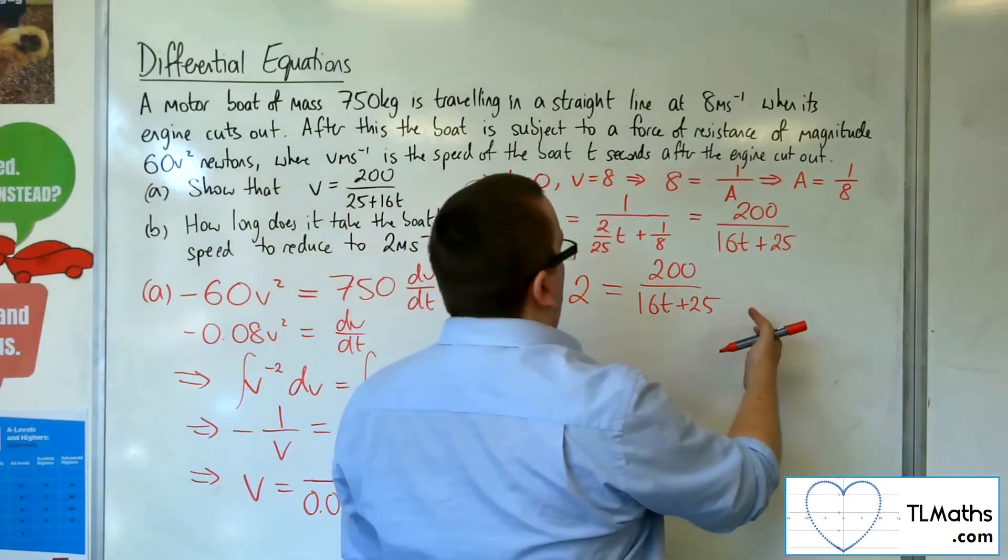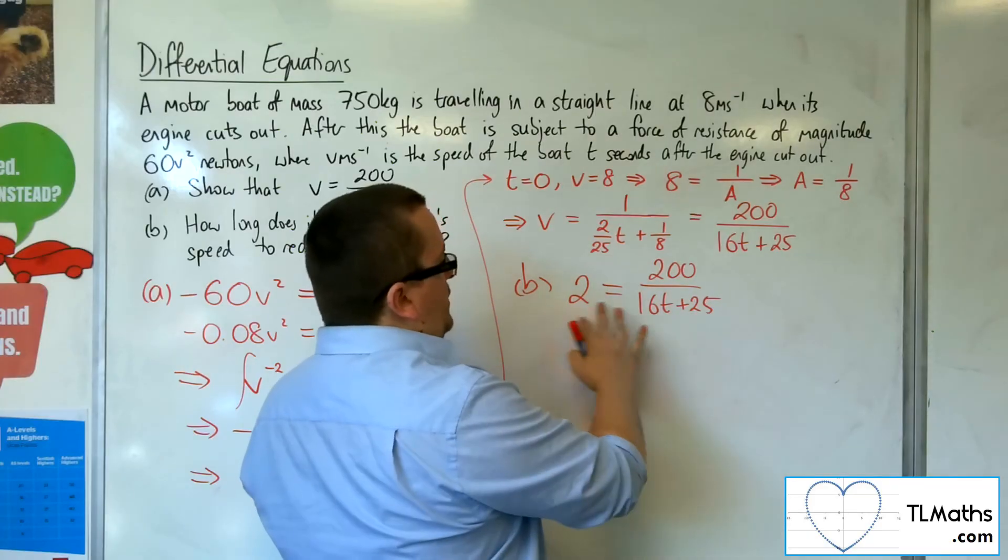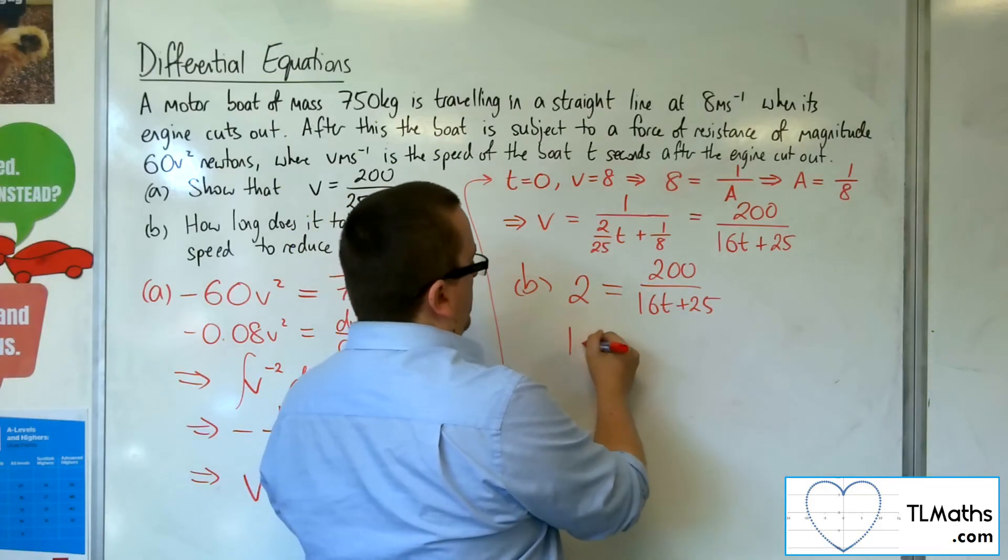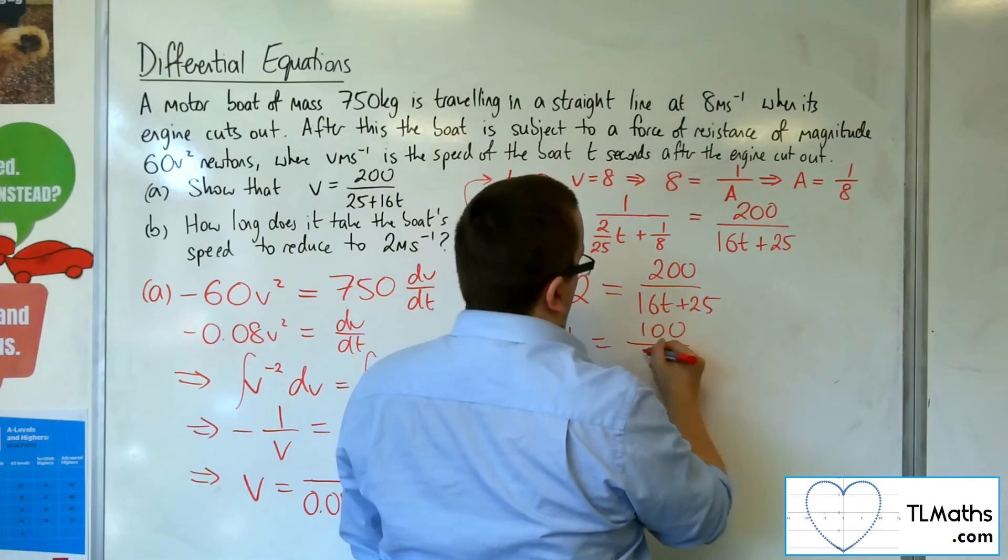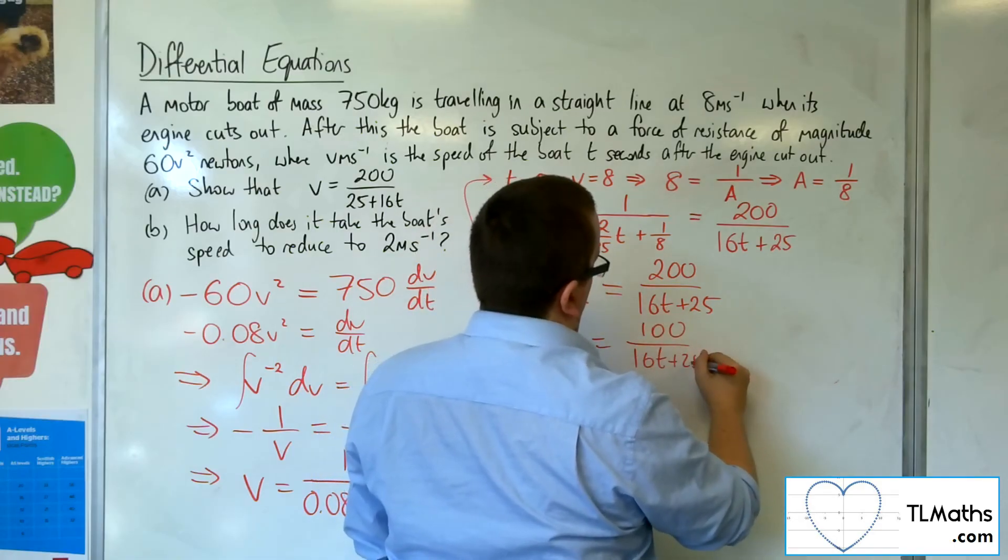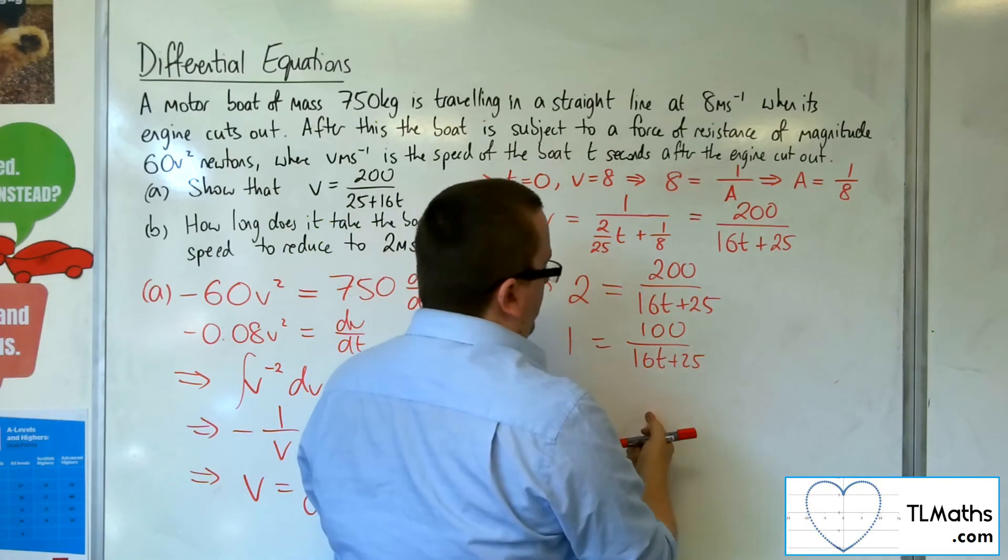So if I multiply both sides by the 16T, well, actually, if I divide both sides by 2 first, that'll make my life a little bit easier, then I can multiply both sides by the 16T plus 25.